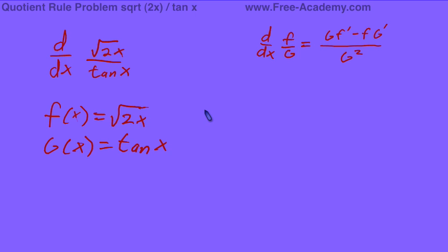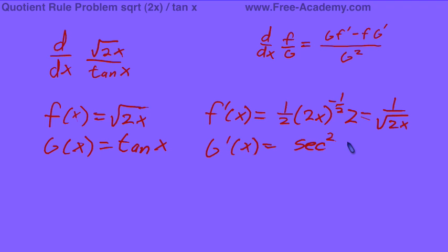Now we're going to need the derivative of both functions, and then we can just plug them straight into our equation. f prime of x equals... No, sorry. 2x to the negative 1 half times 2, so this becomes 1 over square root of 2x. And our g prime of x equals secant squared x.